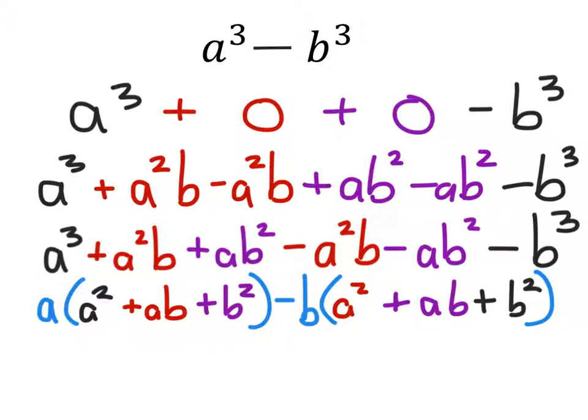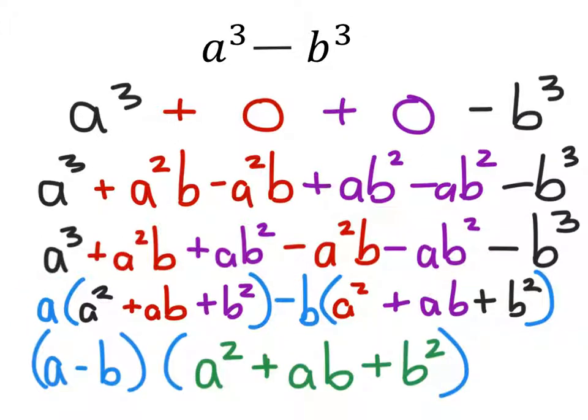then we can see we've got these two polynomials here which are the same, meaning that by grouping these I can factor these out, and then I would have that a minus b in its own set of parentheses. And we can see that in blue, these two I've changed into green, and there we go. We've got a minus b quantity times this other quantity, a squared plus ab plus b squared. And that's what we were going for in the first place.